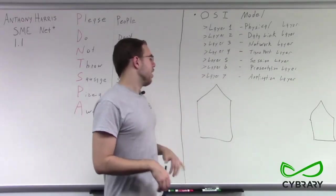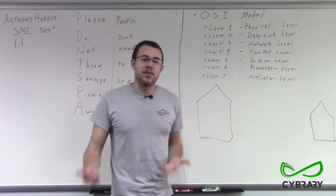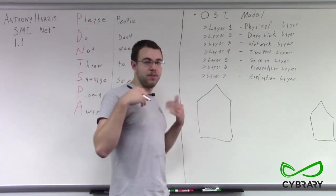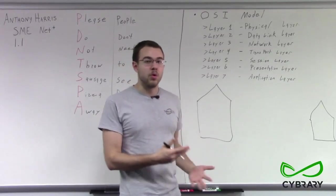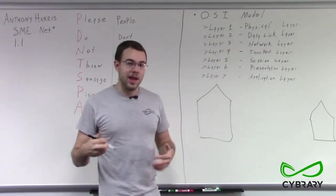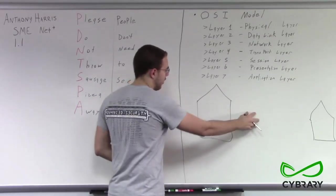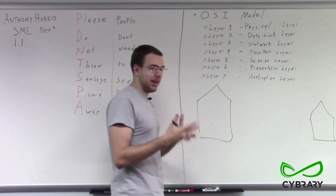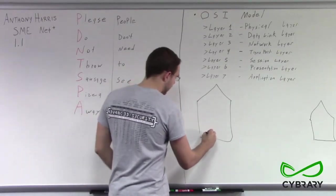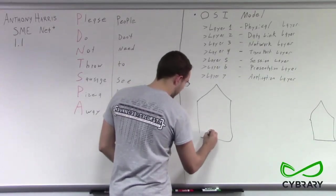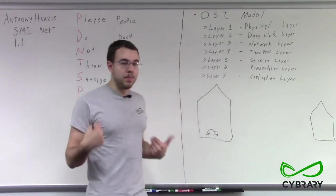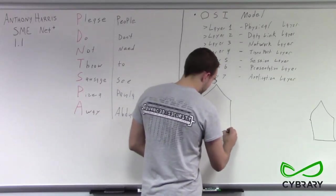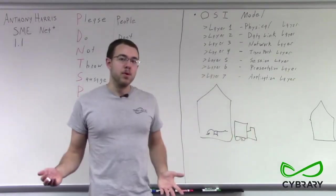The same thing with our OSI model. We have all of these different processes that go on when we connect from one computer to another. We have all of these different sub-situations, different managements and controls, but we just encompass them all in one term known as networking. But if we were to break down our shipping process, we have a layer where we're handling the item and putting it in or taking it out of a box, and then another layer where our box is being loaded onto a truck for movement onto the road.